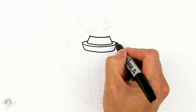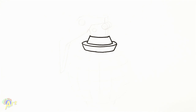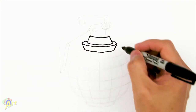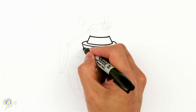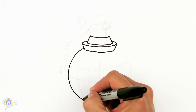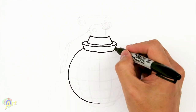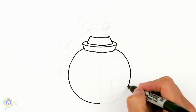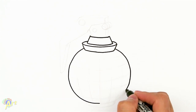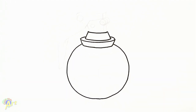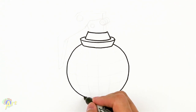Now let's draw the body — it's just going to be a circle, so it might be a little bit tricky. I have a sketch style so it's a little easier, but if you want to use any drawing aid to help you draw the circle that's fine. If not, you can just eyeball it.